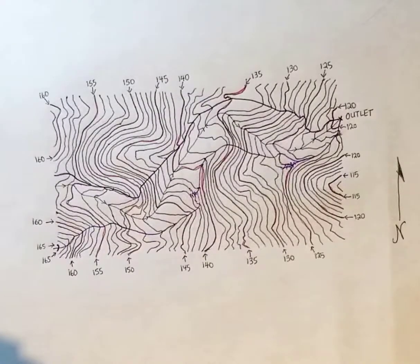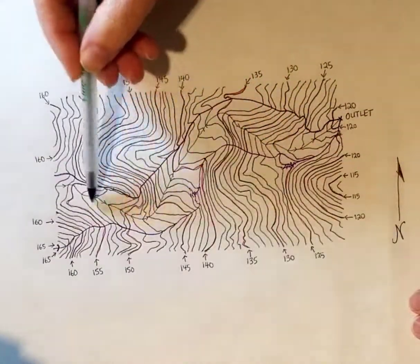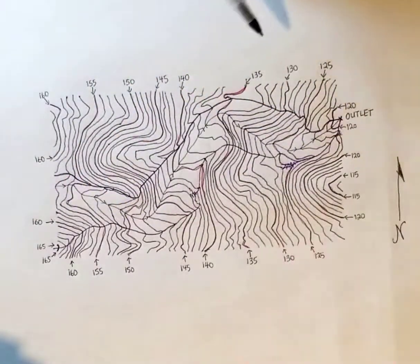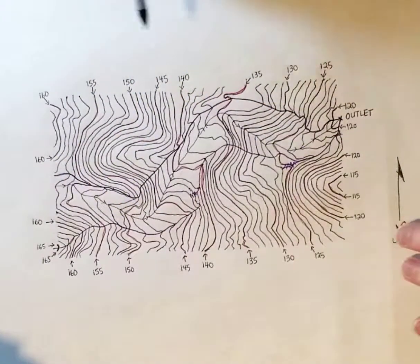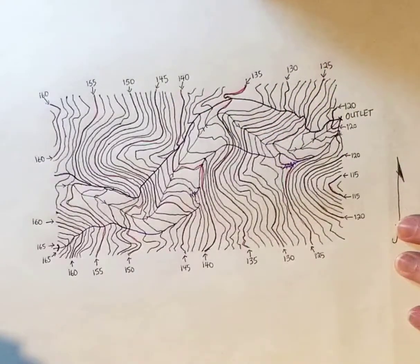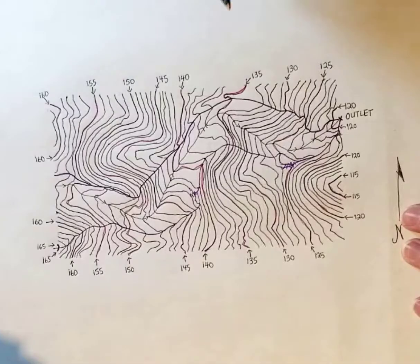So floodplain delineation, essentially you start with this, only you turn off the watershed layers. You still have the same channel. And of course for your project, for your homework, you're going to be using the contour map that you created with your script. So same channel, same direction flow arrows, all that good stuff. However, now you're going to be showing the width of the channel and something called bank full.